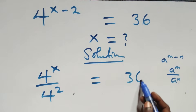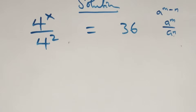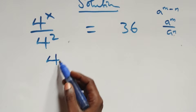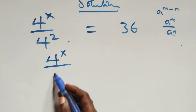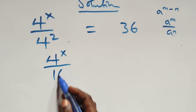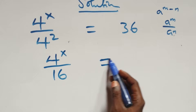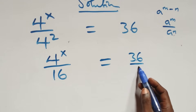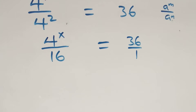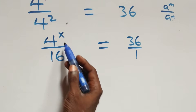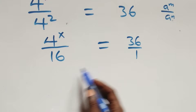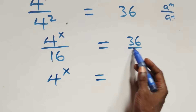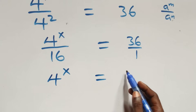The next step here, we can write it as 4 raised to power x over 4 squared times 4 plus 16. Then this goes to 36 over 1. From here we cross multiply: 4 raised to power x times 1, which is the same as 4 raised to power x, equals 36 times 16.